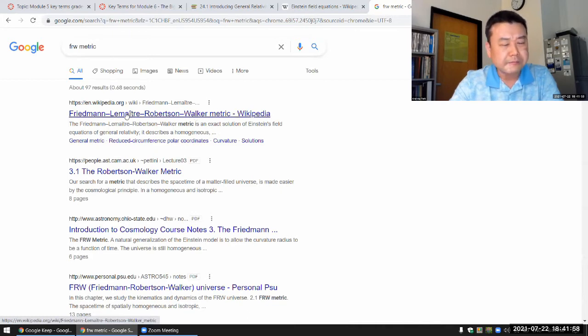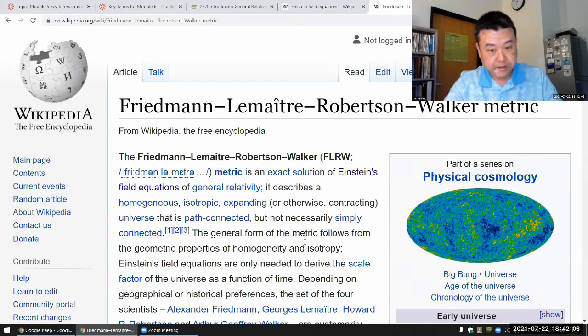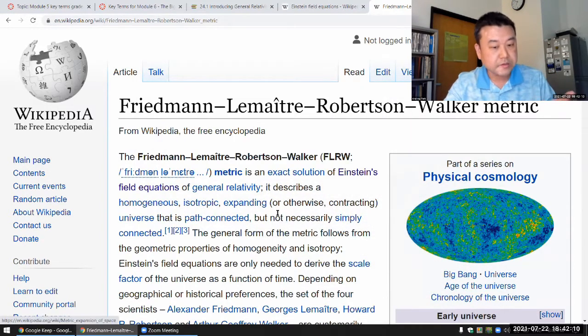Why am I forgetting? I don't know. FRW metric is what I learned when I was in school, when I was taking general relativity class. So this is, as it says, it's an exact solution of Einstein's field equations.